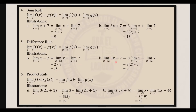Next example: the limit of 3x minus 7 as x approaches 2 equals 3 times the limit of x as x approaches 2. Following the constant multiple rule, that gives us 3 times 2. The limit of 7 as x approaches 2 following the constant rule gives us 7. So 3 times 2 is 6 minus 7, that will be negative 1.